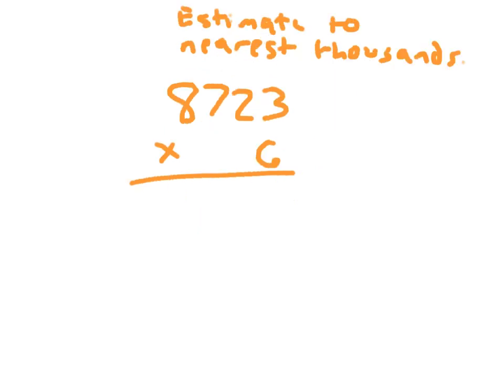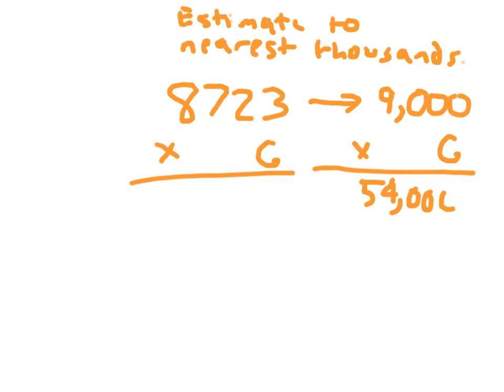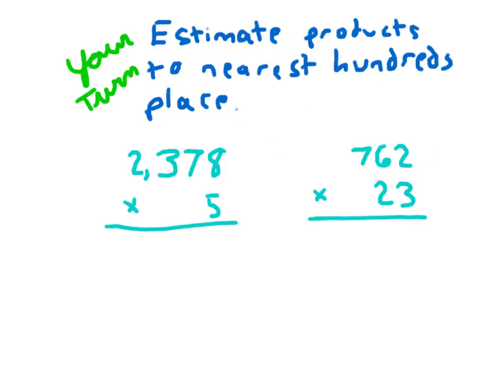Here the instructions say to estimate to the nearest 1,000's. So again, we take this factor here and round it to the 1,000's place. And we keep the other factor the same. 9,000 times 6 will give us 54,000. And that can give us an estimated product so that when we do figure out the exact answer, we can understand whether or not our exact answer is reasonable.